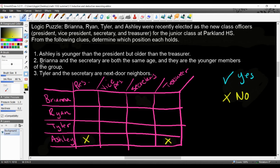Second clue. Brianna and the secretary are both the same age, and they are the younger members of the group. So according to clue number two, Brianna and the secretary - that means Brianna is not the secretary. Her and whoever the secretary are, they're the exact same age, and they're also the younger members of the group.